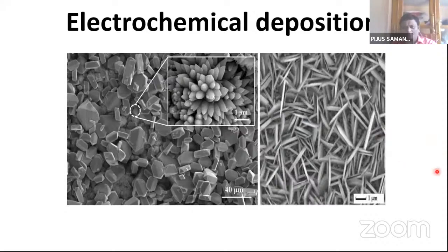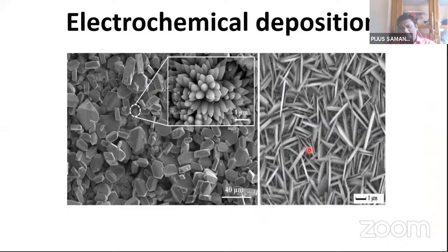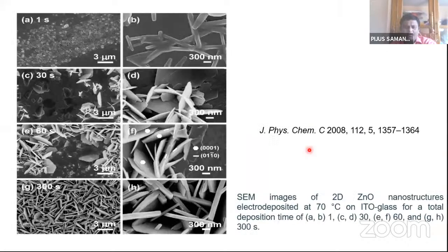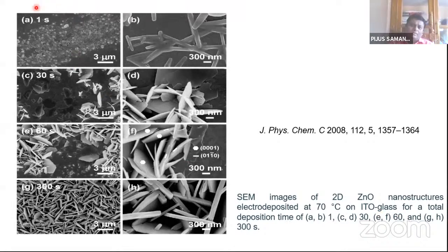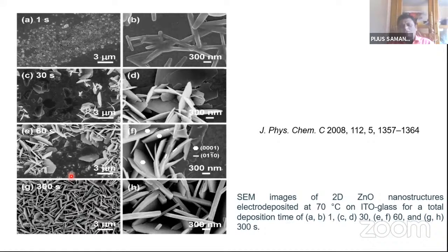These are zinc oxide nanostructures grown over a zinc substrate — you can see different types of octahedral, prismatic, and claw-like structures formed. In the second image, some two-dimensional flake-like and complex structures have been grown. The effect of time is shown: growth of zinc oxide nanostructure by electrochemical method at 70°C on ITO-coated glass substrate — from 30 seconds to 60 seconds to 300 seconds, the morphology clearly changes.